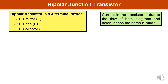The base is the middle region of the transistor. It must be very thin and lightly doped. The function of this region is to pass all the charge carriers — whether electrons or holes — onto the collector.